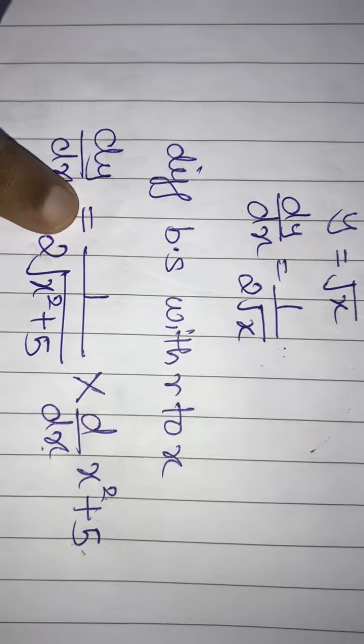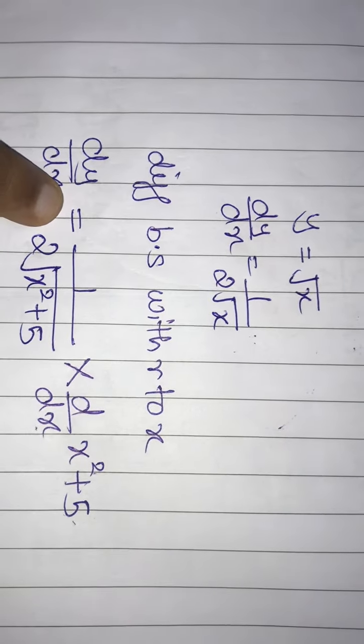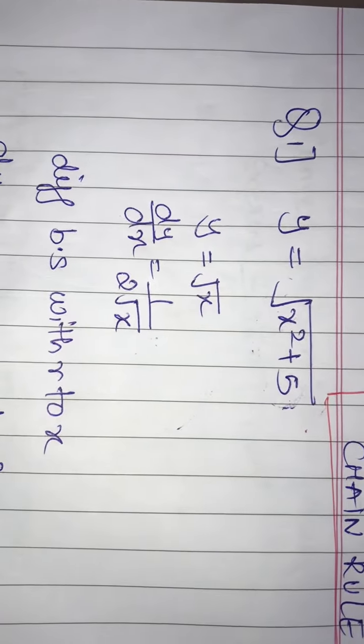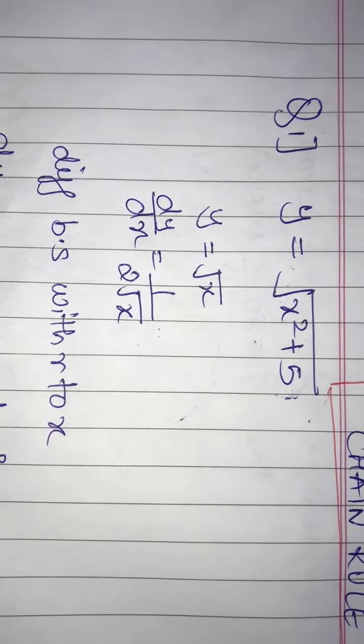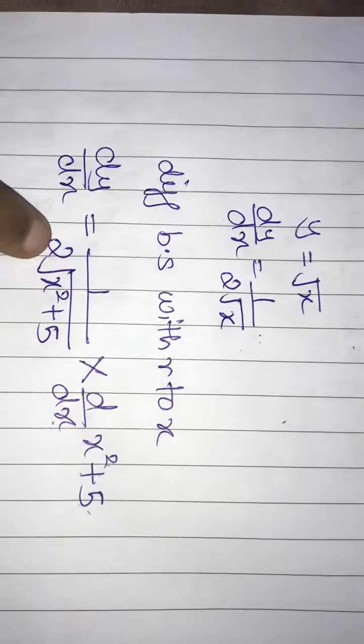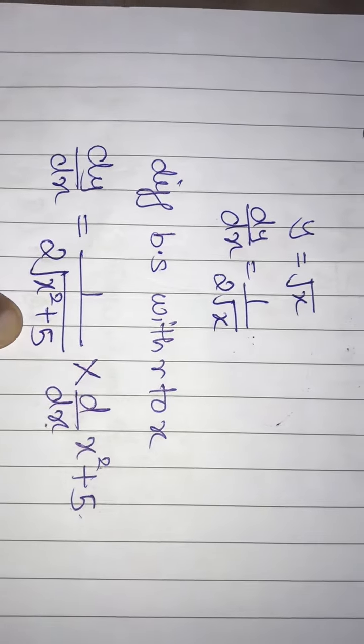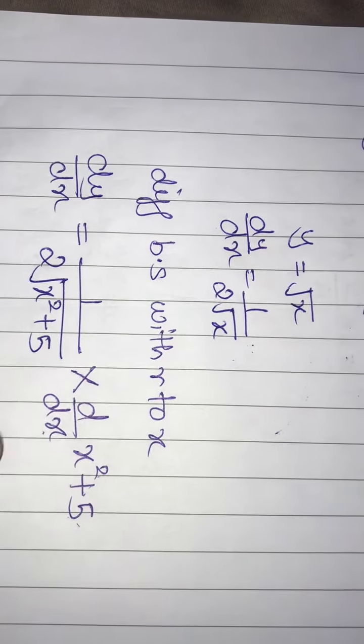Differentiating both sides with respect to x, you will get dy/dx is equal to—so here the root of x square plus 5, for a little time consider x square plus 5. By applying this formula, you will get derivative 1 upon 2 root x square plus 5 and again into derivative of x square plus 5 by the chain rule.